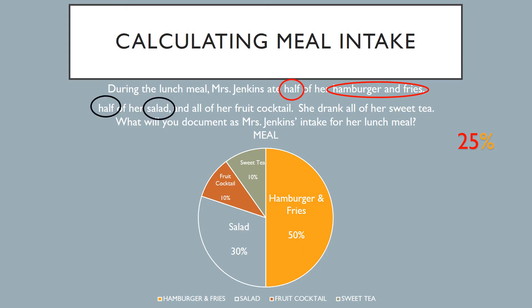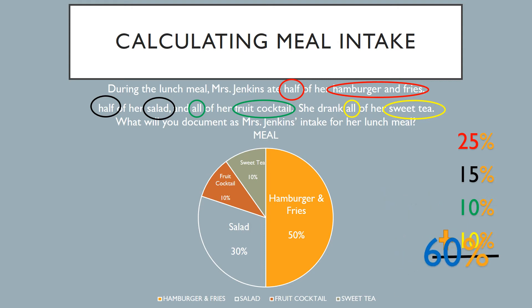Now let's look at the other food item, her salad. She only ate half of her salad. Her salad, if you look at the pie chart, accounts for 30% of the meal. Again, using basic division: half of 30 is 15%. Her fruit cocktail — she ate all of her fruit cocktail, which accounts for 10% of her meal. And she drank all of her sweet tea, which accounts for another 10%. Now all you have to do is basic addition — add up all of these percentages — which gives you a total of 60%. You will document that Mrs. Jenkins ate 60% of her meal.